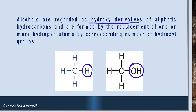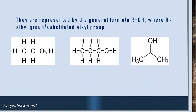Alcohols are represented by the general formula ROH, where R can be an alkyl group or substituted alkyl group. R cannot be a phenyl group, because if a benzene ring is directly attached to OH then it becomes a phenol. An example is methanol, where one hydrogen of methane is replaced by a hydroxy group.